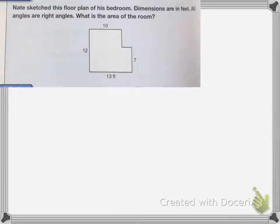For the second part of a rectangular area, here I have an irregular shape. So Nate sketched this floor plan on his bedroom. Dimensions are all in feet. All angles are all right angles. What's the area of the room? If you remember before, we found the perimeter of a shape like this. Area is going to be similar. First, I have to find my missing lengths.